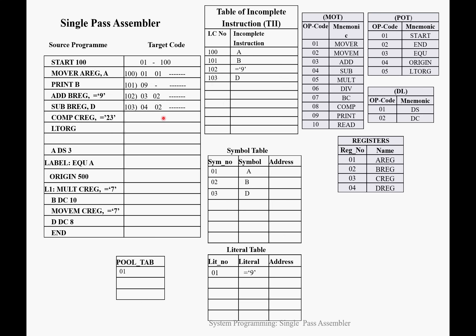Next is COMPARE CREG, =23 at location 104. COMPARE is at position 06 in MOT, CREG is at third position in the register table. =23 is a literal — we keep that field blank and add =23 into the literal table at the second position and into the table of incomplete instructions.